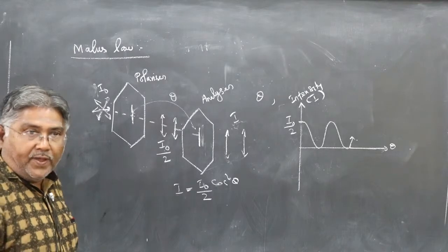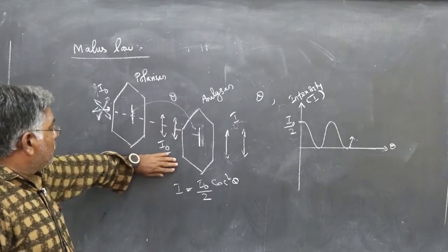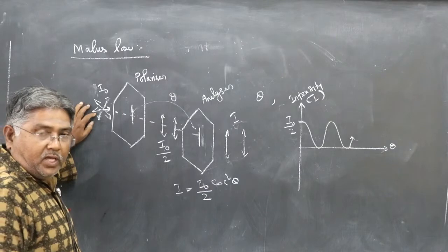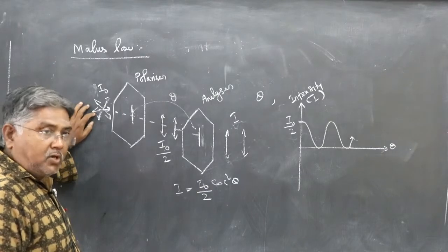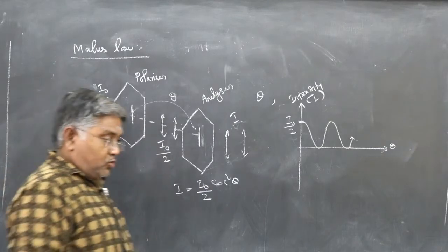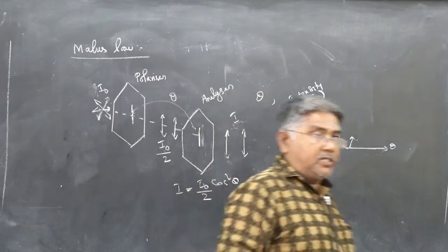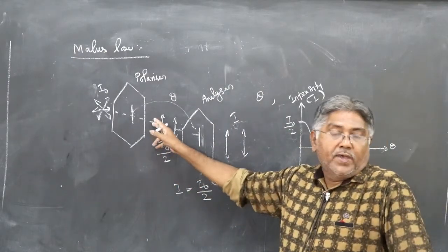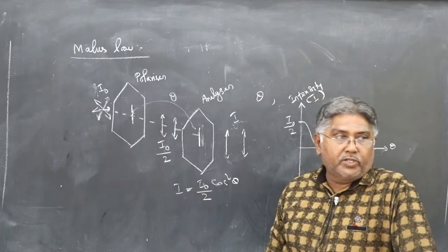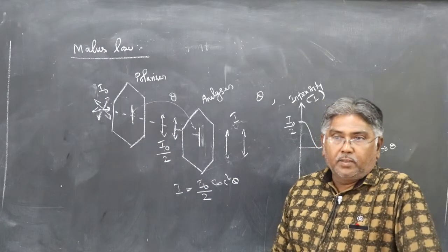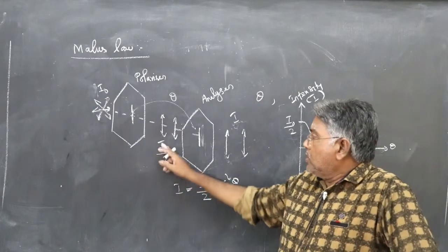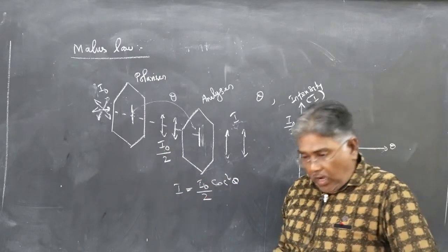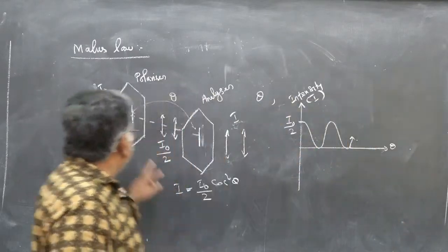Why is it I₀/2 after the polarizer? When unpolarized light is incident on the polarizer, the transmitted intensity is I₀/2. This arises because of the average value of cos²θ over one full period, which gives one half. So the intensity after the polarizer is I₀/2.